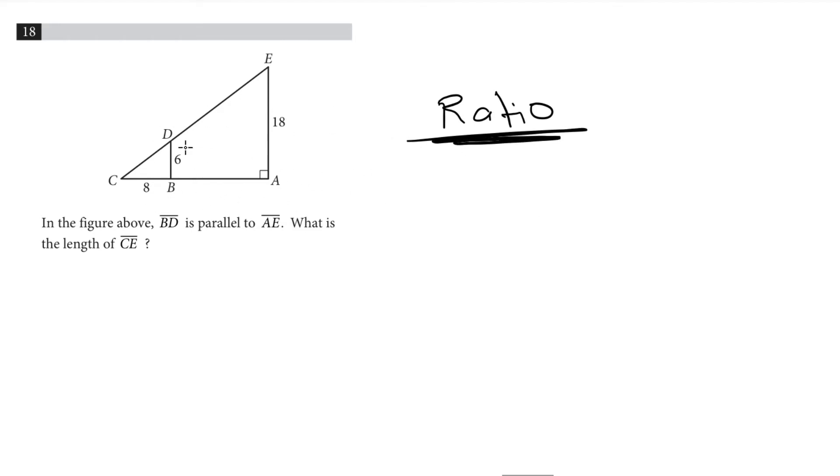In order to find this ratio we need to divide one side of one triangle by the same side of the other triangle. So let's divide the vertical side of triangle CEA, 18, by the vertical side of the triangle CDB, 6. That gives us a 3. That means the ratio between these two triangles is 3.